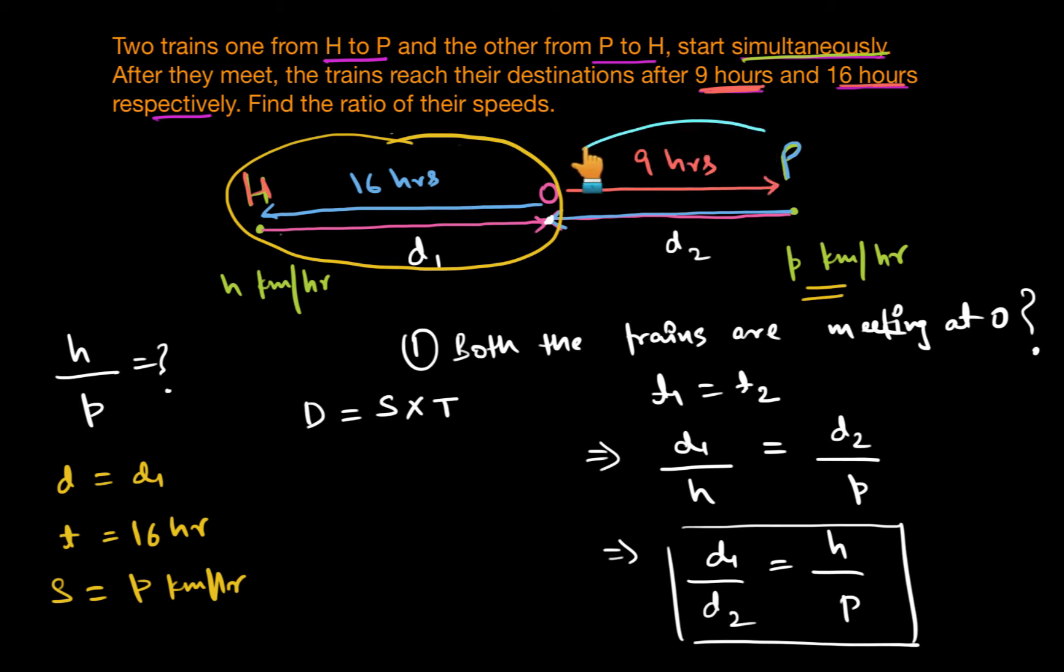Similarly, if we will talk about the second situation, from here I can write distance is D2 kilometers, time taken is 9 hours. And speed would be the speed of the train that started from H because that same train is travelling from O to P in 9 hours. So the speed will be H kilometers per hour.